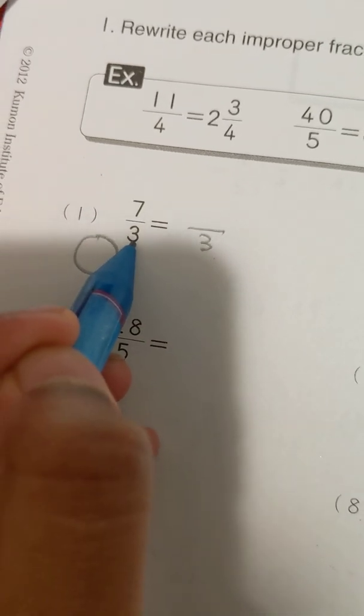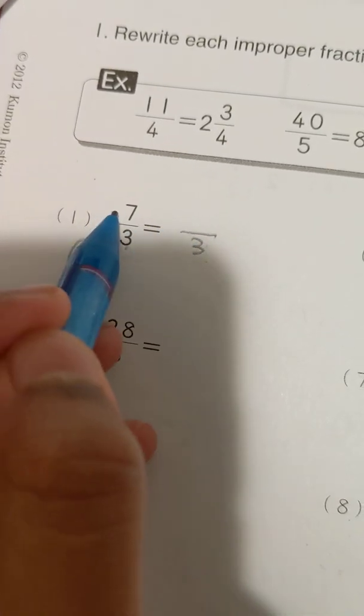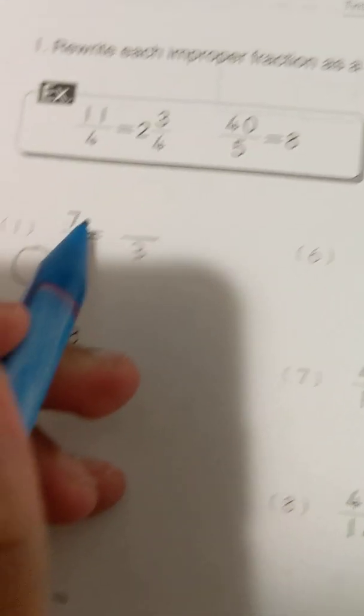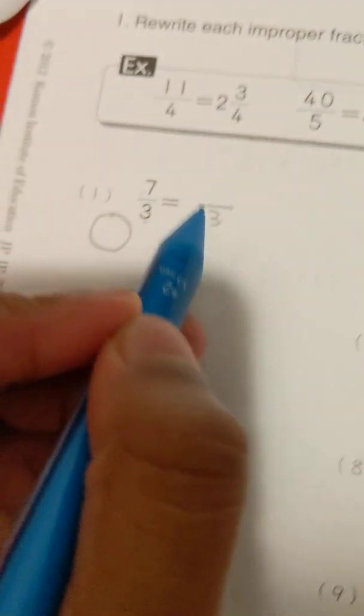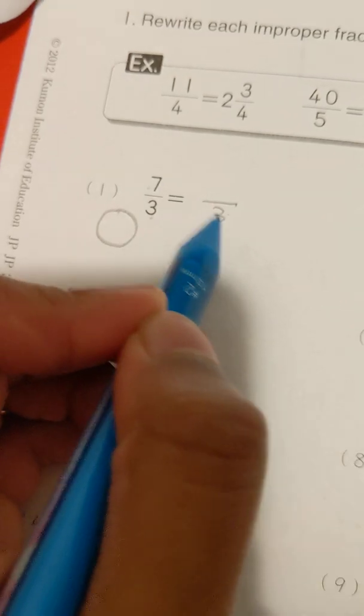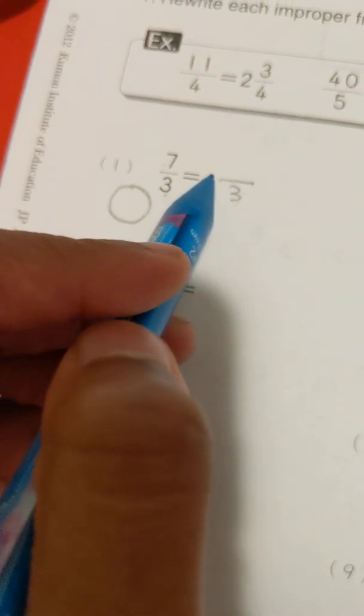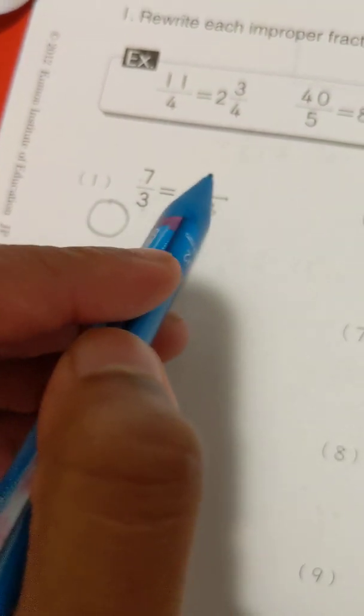So you look at 3. How many times is into 7? So if you know your timetables, this would be really easy. 3, 2, the answer that you're multiplying this number would go over here. And the answer, the remainder is here.